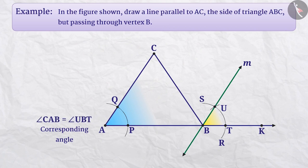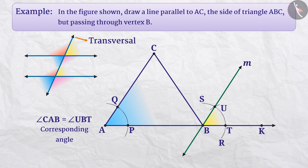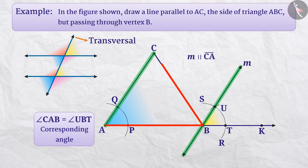As we know, if two parallel lines are cut by a transversal, each pair of corresponding angles are equal in measure. Thus, line M is parallel to side CA of triangle ABC.